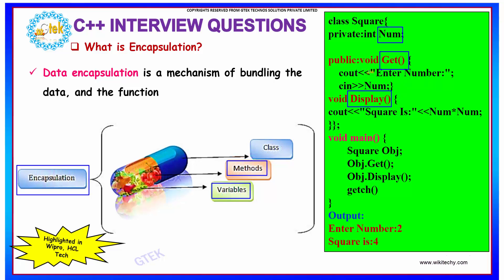These can be combined together under a common class, that is Square. The class Square has a variable as num and two methods as get and display. This method of binding things together or bundling the data is known as encapsulation.